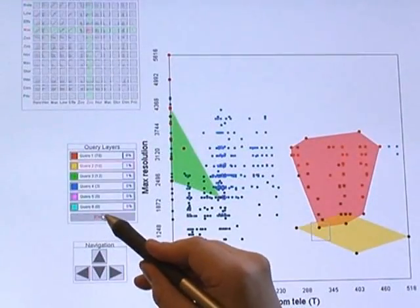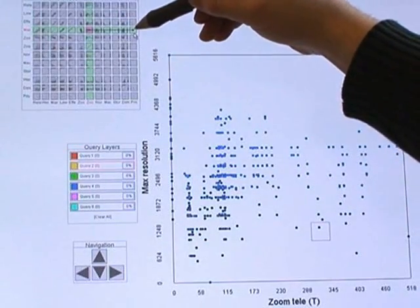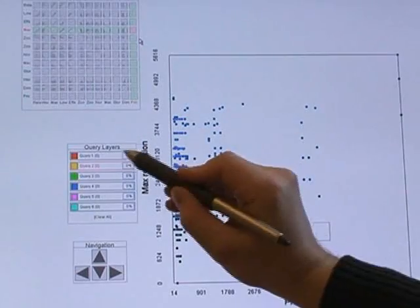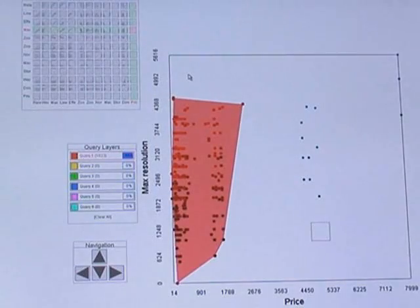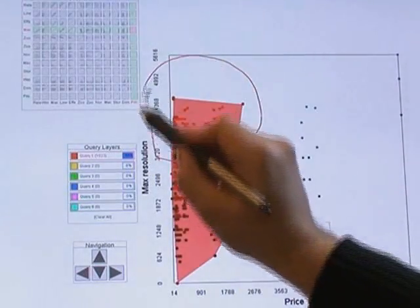Unsatisfied with this exploration branch, the user clears all queries and returns to the price and resolution scatterplot. He builds a new query consisting of both of the low and mid-level cameras. He then sculpts the query to only include cameras with more than 3 megapixel resolution.